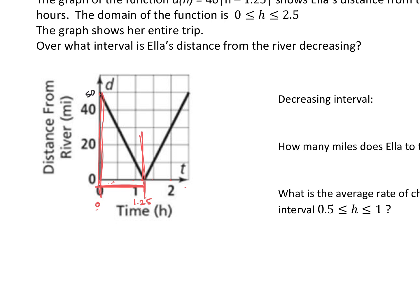What does that look like in terms of how we write our answer? Well: 0 ≤ h ≤ 1.25 — not 1.125, but 1.25. That is the decreasing interval. These intervals are based off the x-axis, or your horizontal axis, which was h in this case. You can find the decreasing section on the graph, then go straight down to the axis and say that's from 0 to 1.25.